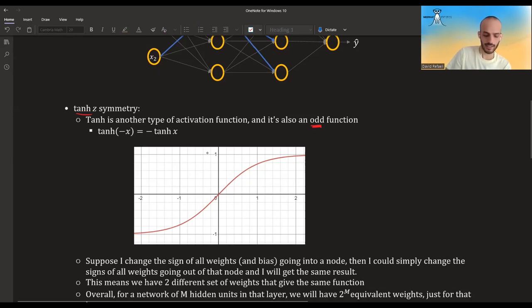What it means is that tan of minus x, suppose I'm taking x to be one, so tan of minus one is this value over here, let's say minus 0.8 more or less, then it's equal to the tan of one, which is 0.8 or more or less only minus, so it's equal to minus 0.8. This is what an odd function means.